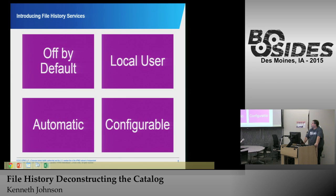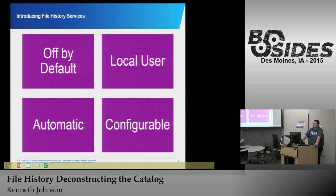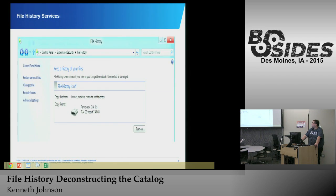So, file history — what is it? It is a backup solution that is integrated into Windows 8, 8.1, Windows 10, and more than likely anything else Windows in the future. It is off by default, but it's enabled per user. It does automatic backups, and it's very configurable. You can decide how long you're going to retain the backups, how long it backs up for, the frequency that it backs up, and where it backs up.